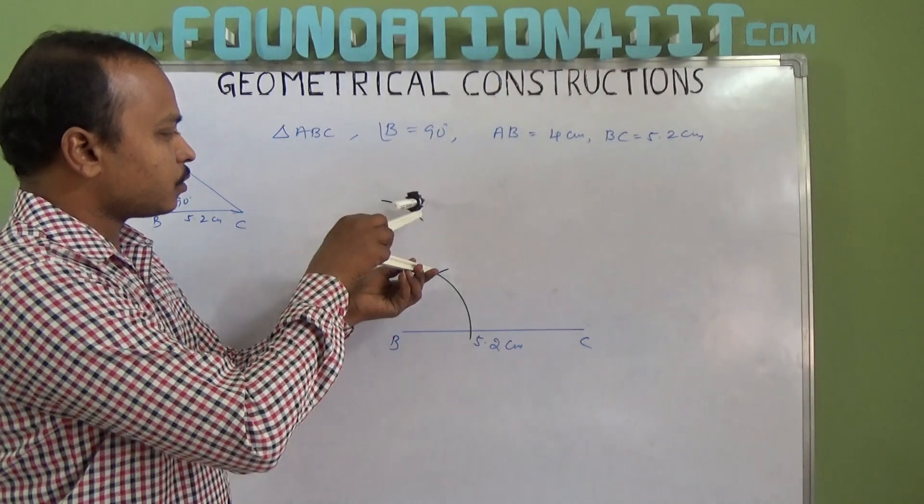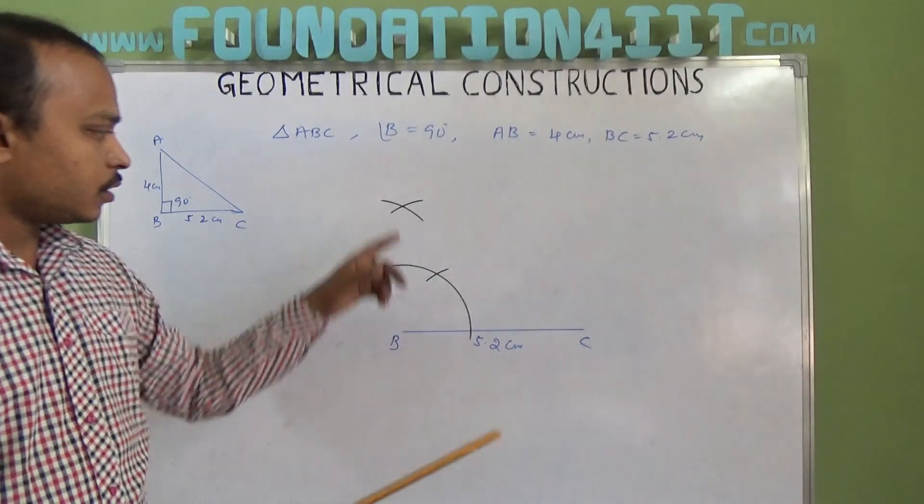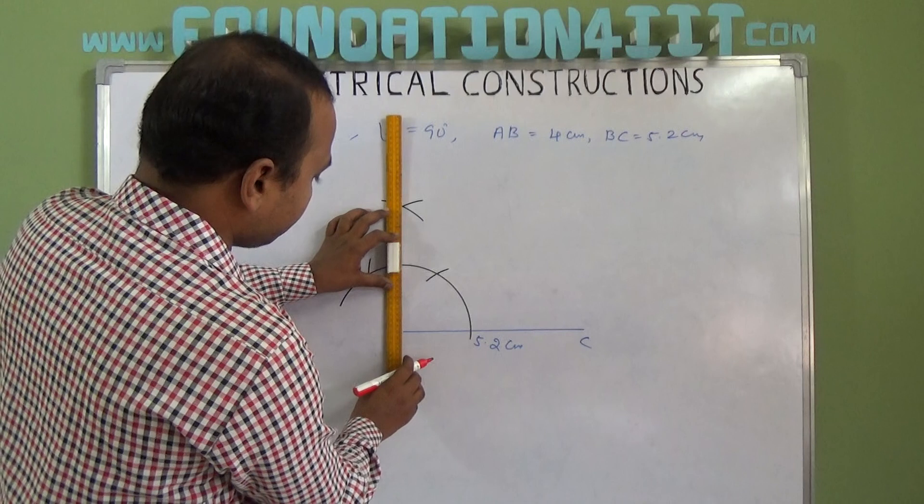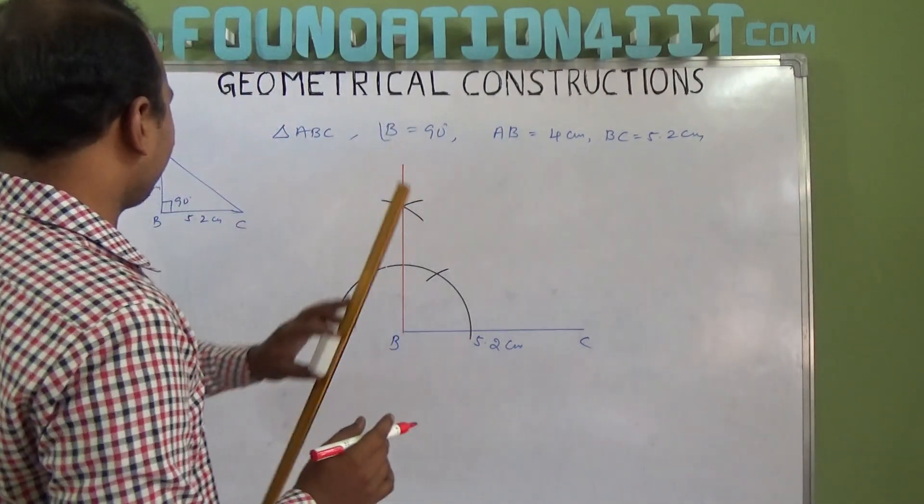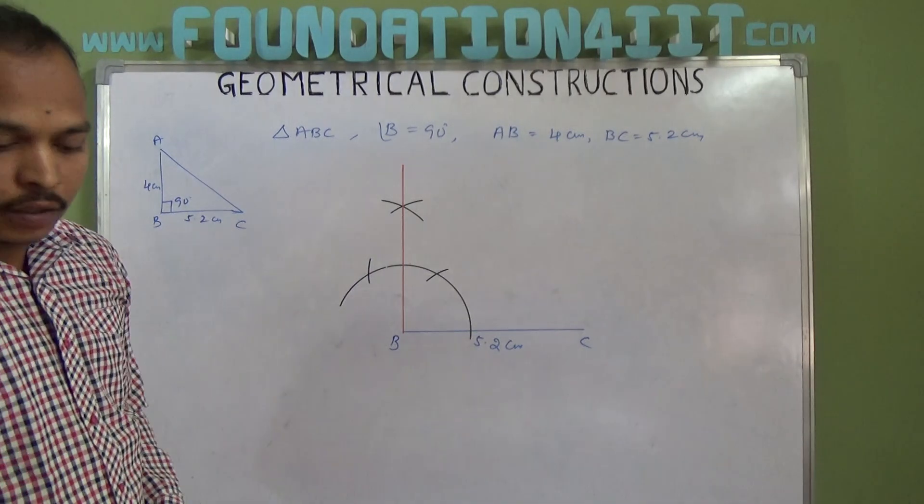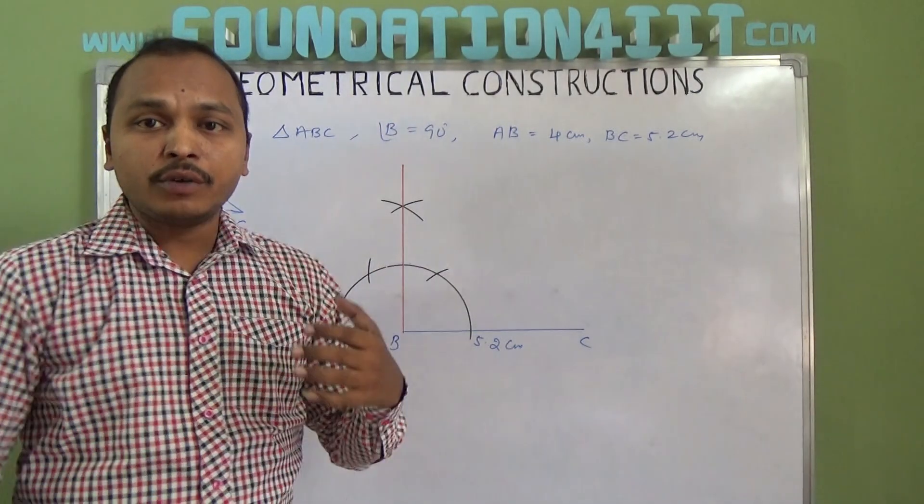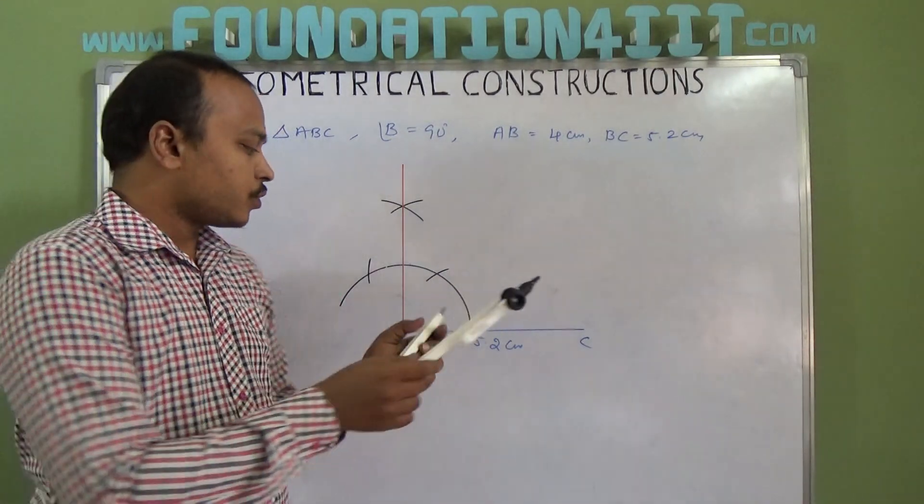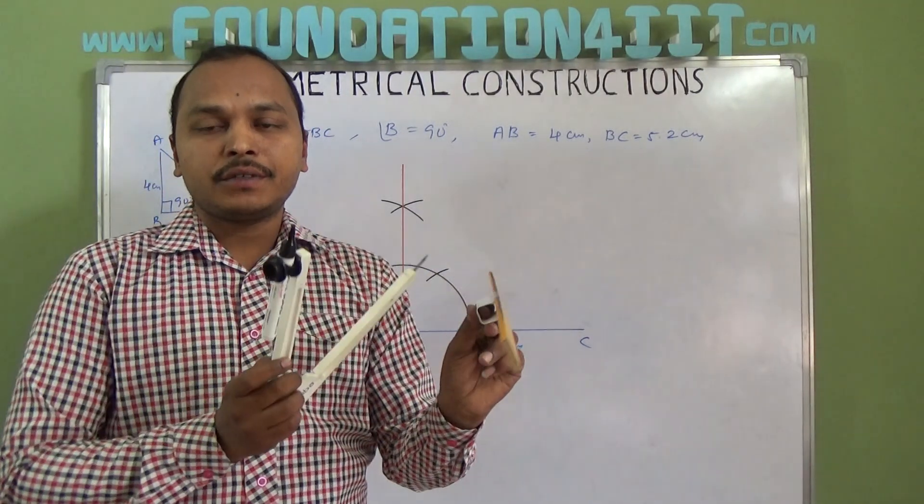If you join these points, there is a perpendicular line—this is the 90-degree line. Now, BA is somewhere on this line, but we know the BA distance is 4 centimeters. So take 4 centimeters using the scale. From B, we need to draw the arc at 4 centimeters.